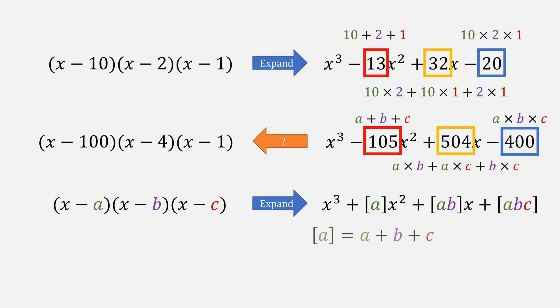Here, bracket a means it's the sum of all single roots. Bracket a, b means it is every pair multiplied and then summed. And bracket a, b, c is every trio multiplied and then summed. And you can keep continuing the pattern.